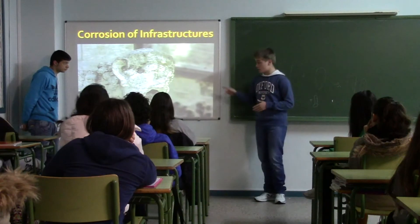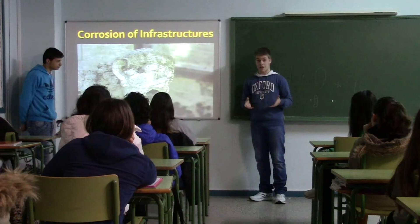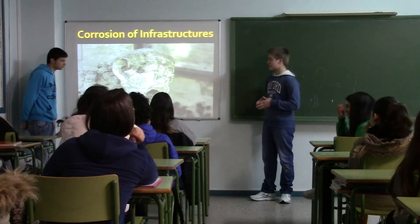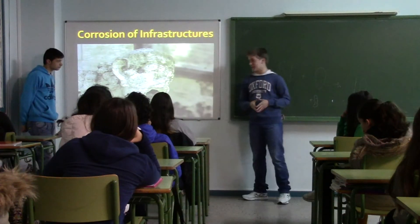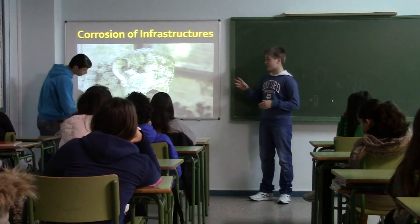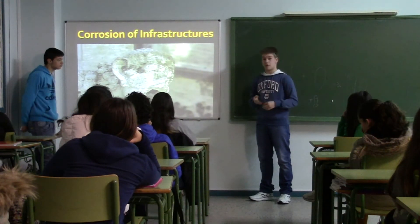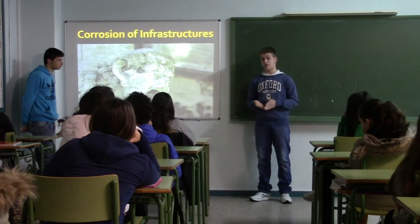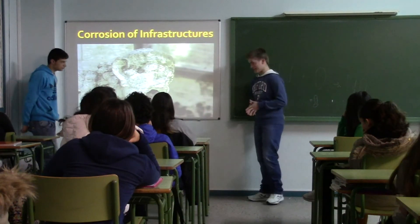Now, corrosion of infrastructure. Acid rain can destroy monuments or important buildings because the acid can destroy rock or even metal. What you are seeing in this picture is a gargoyle from the Notre Dame Cathedral, and as you can see it is all eroded because of the acid. It is not only monuments — it can be all types of buildings — but monuments are especially important because we cannot repair them easily.